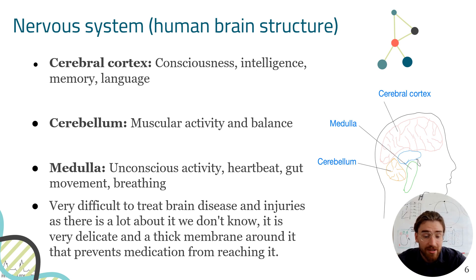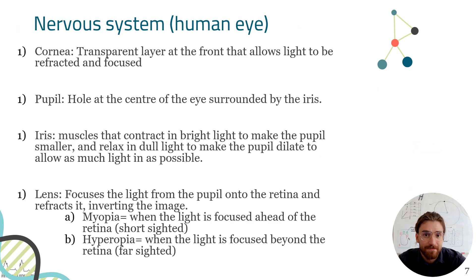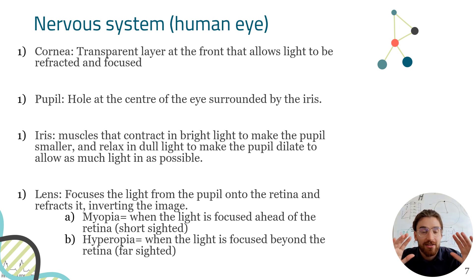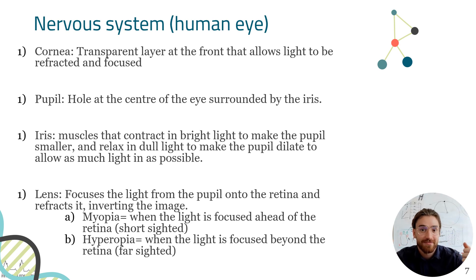The brain is also very delicate and you have to get through the skull to reach it, so surgeries are incredibly invasive. Another crucial part of the nervous system you need to know is the eye. The eye is made up of various parts that allow us to perceive light and transform it into an image for the brain to make sense of.